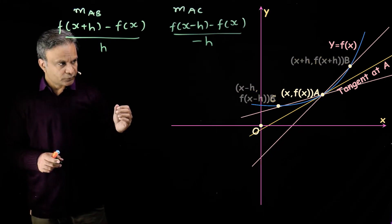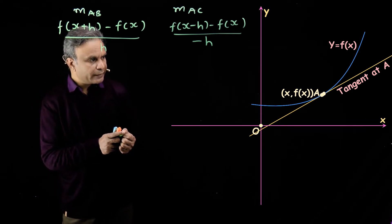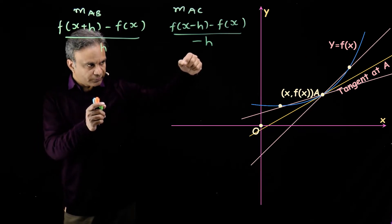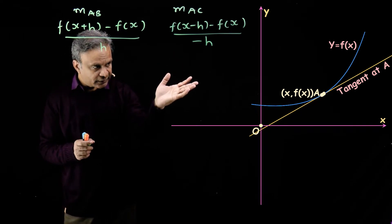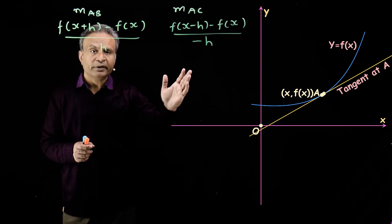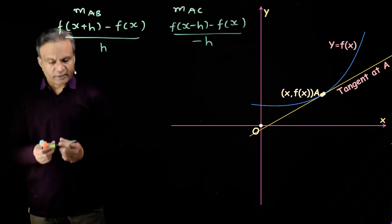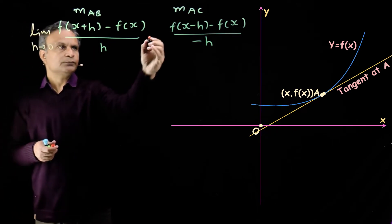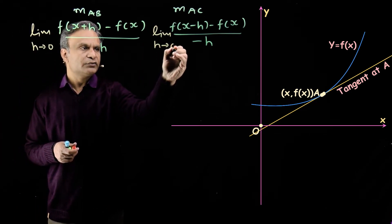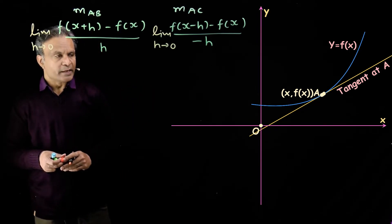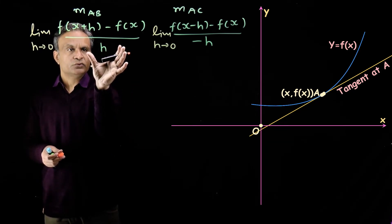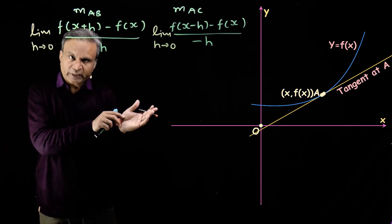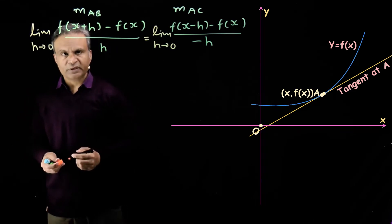Now if we move points b and c towards point a along the curve, then lines AB and AC will tend to become tangent to the curve at point a. In the limiting case, when h approaches 0, these lines will merge with the tangent to the curve at point a. The slope of this tangent line will be the limiting values of these two ratios, and since both lines are merging with the same unique tangent, these two limiting values must be equal.